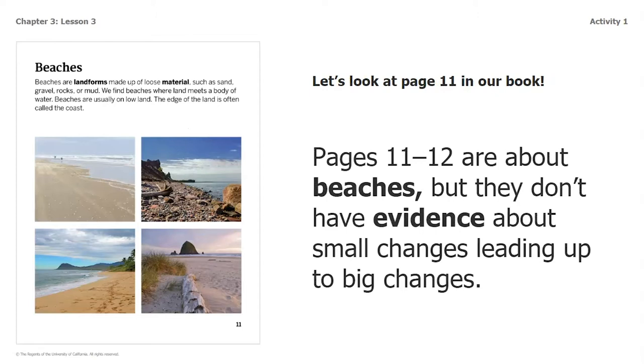We're going to be looking at page 11 in our book, which focuses on beaches. Beaches are landforms made up of loose material, such as sand, gravel, rocks, or mud. We find beaches where land meets a body of water. Beaches are usually on low land, and the edge of the land is often called the coast. Pages 11 and 12 are about beaches, but they do not have evidence about small changes leading up to a big change, so I need to continue reading.